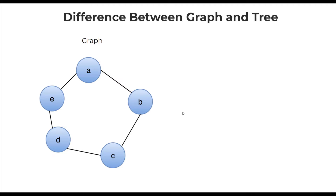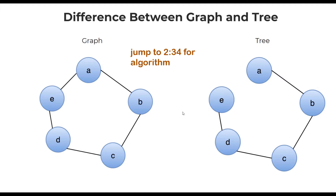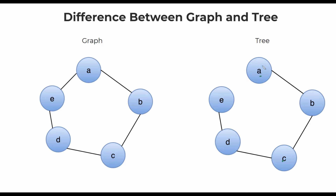First, let's understand how a tree differs from a graph. A graph is simply a set of vertices connected to each other with some edges — there are no other specific rules. Whereas all trees are graphs, but in order to be qualified as a tree, if you pick any two vertices, say A and C, they should be connected with just one well-defined path, and there should not be more than one path between the two vertices.